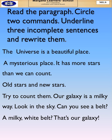Read the paragraph, circle two commands, underline three incomplete sentences, and rewrite them. First of all, I am going to read this paragraph — listen to me very carefully. Then we are going to underline three incomplete sentences first, and then circle the two commands.